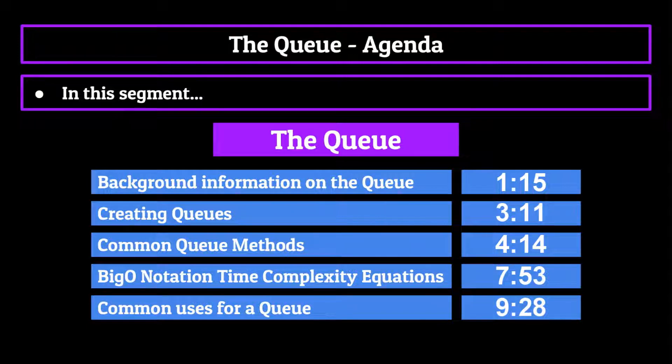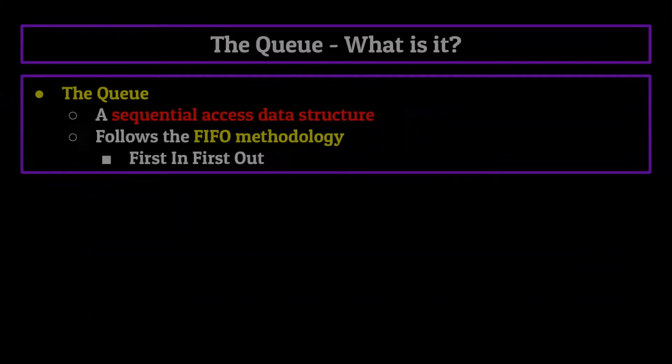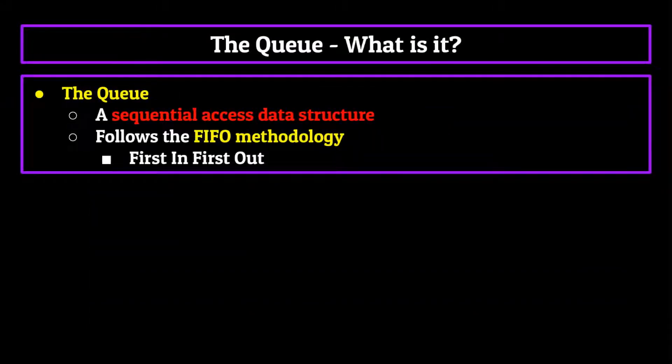For those of you sticking around though, let's start with the million dollar question, which is, what exactly is a queue? Well a queue, like the stack, is a sequential access data structure, meaning we can only access the elements contained within it a certain way.